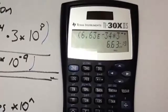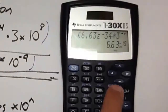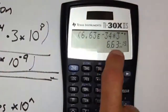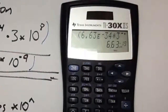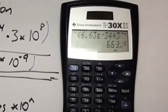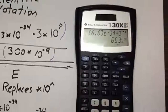The TI-30X2S gives us 6.63 with a small 'times 10' and negative 19. So our answer is 6.63 times 10 raised to the negative 19.